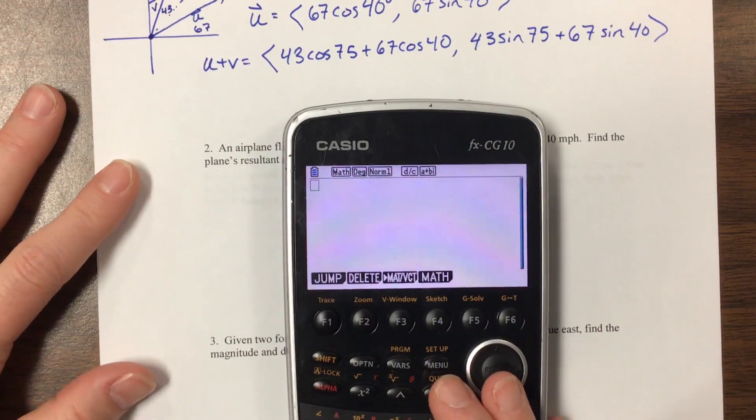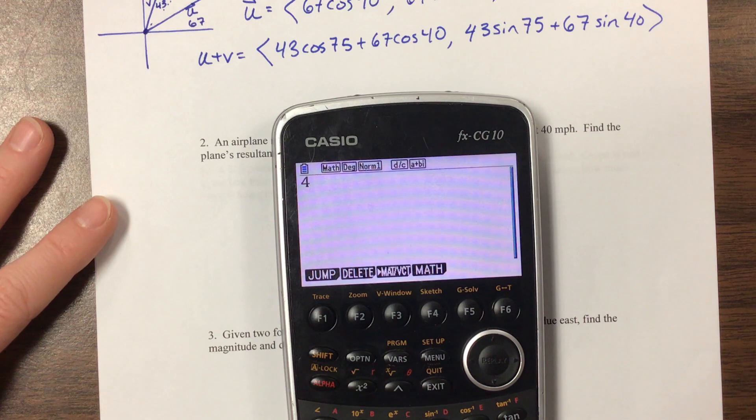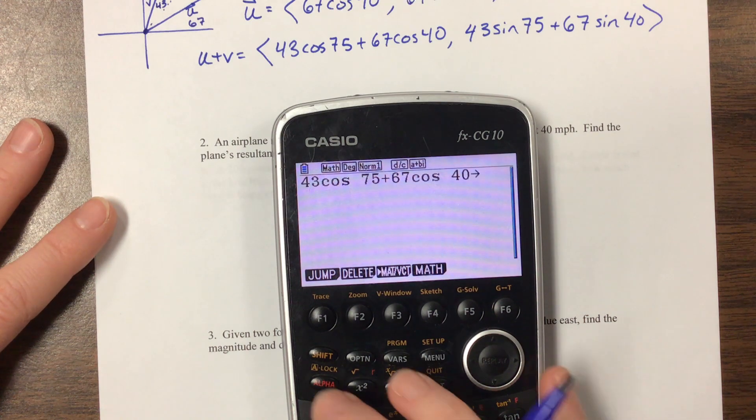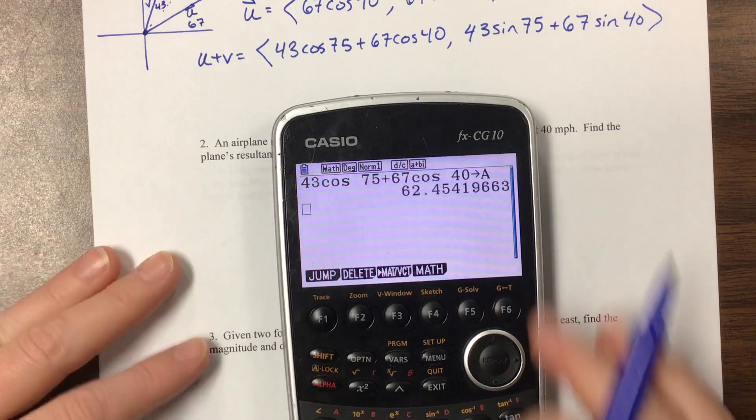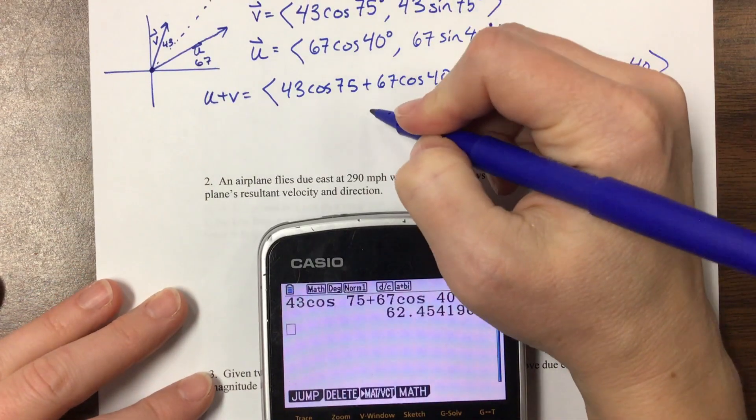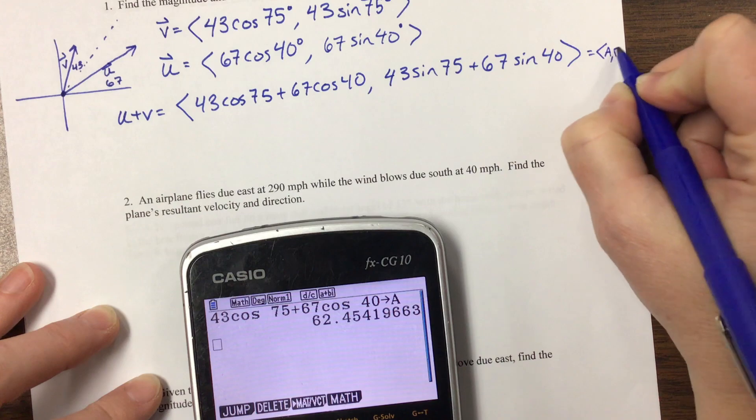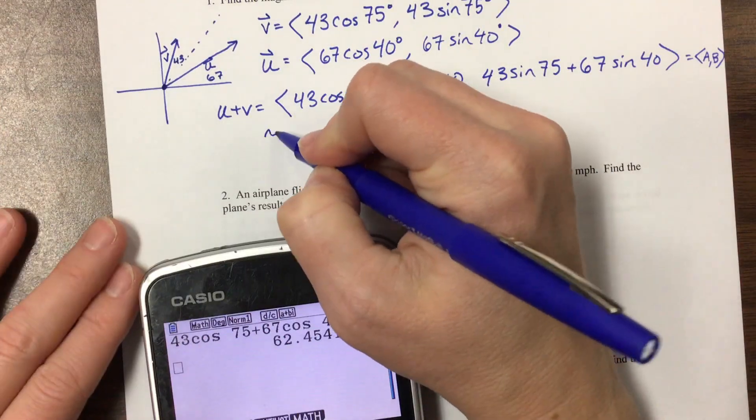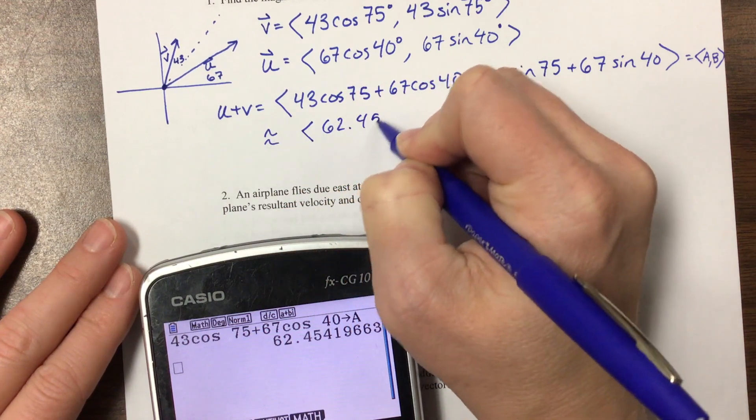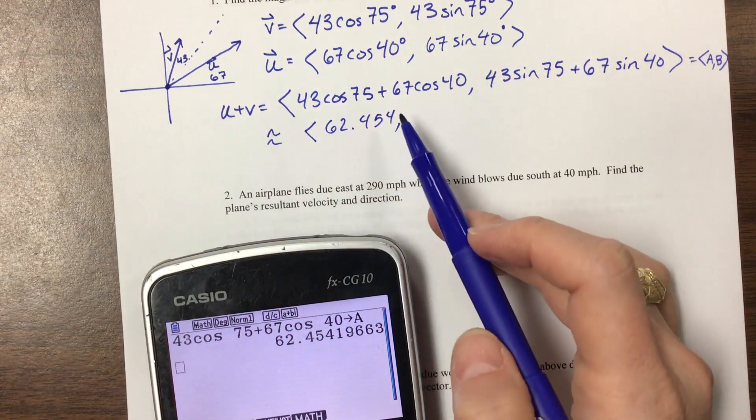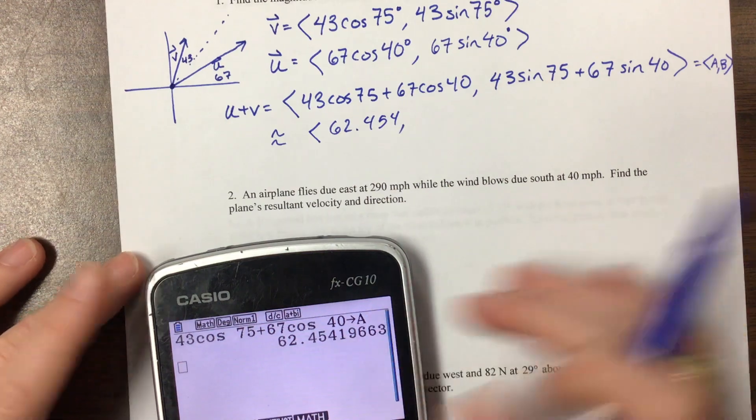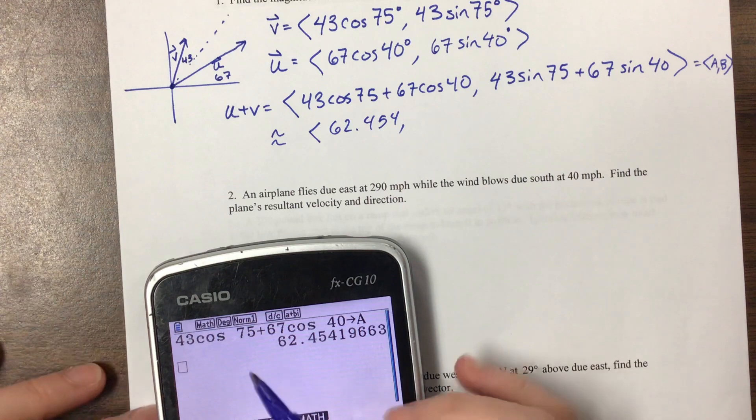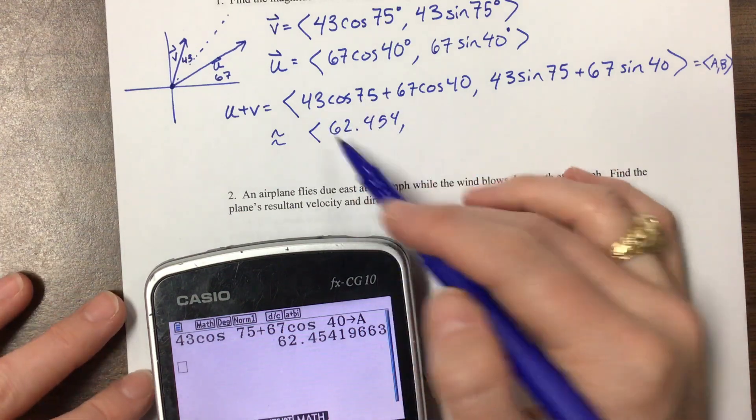And so what I'm going to do is I'm going to take 43 cosine of 75 plus 67 cosine of 40, and I'm going to store that answer as A. Okay, and maybe if it helps me, I can make a little note that this is equal to A. So now I can write this down. This is going to be approximately equal to 62.454. Notice I had to round here. The calculator has not rounded, and the calculator has all of it. So A is going to be equal to all of the decimals, not rounded, and my value here is rounded.